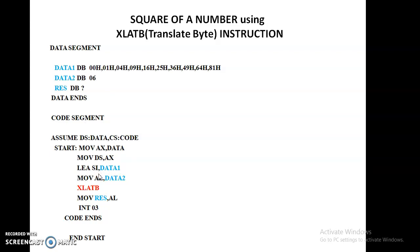The next instruction loads the effective address of data1 into the SI register. SI register is called a pointer register, and this SI register is pointing to data1 — that means it is pointing to the starting address of data1. So SI is now pointing to this location. The next instruction is MOV AL, data2. Our data2 value is 6, and we are moving that 6 into the accumulator register AL.